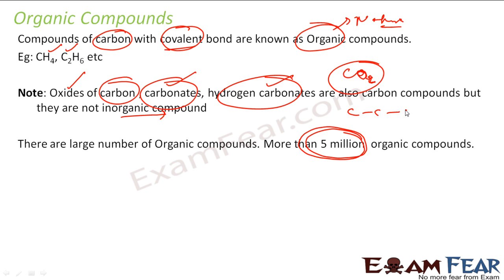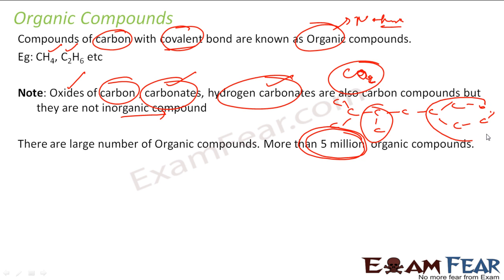Carbon forms chains, branch chains, and cyclic chains. It can form a branch, it can form a cycle, it can form a long chain. And with these different kinds of chains, we have more than 5 million organic compounds.